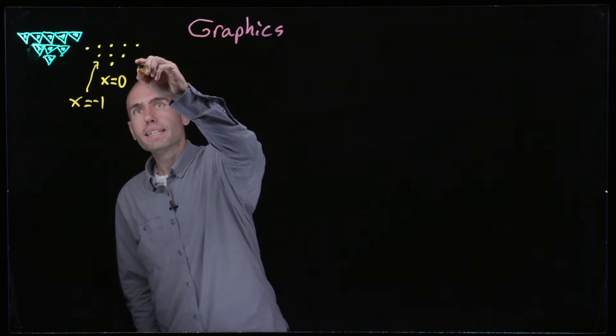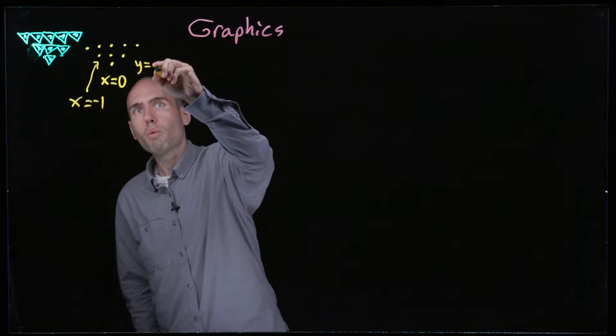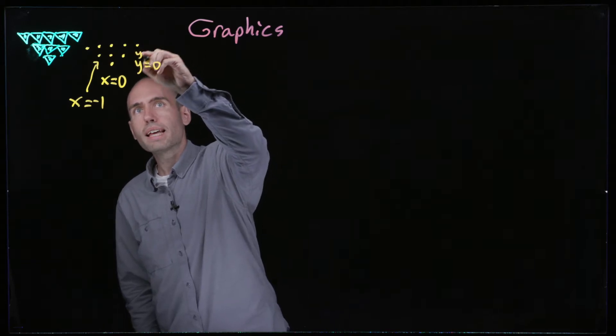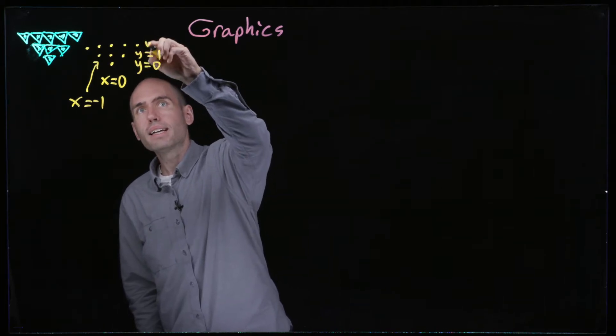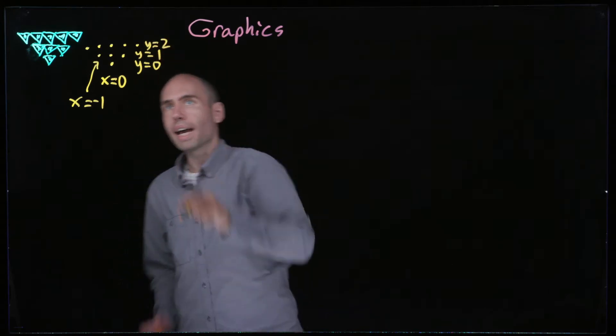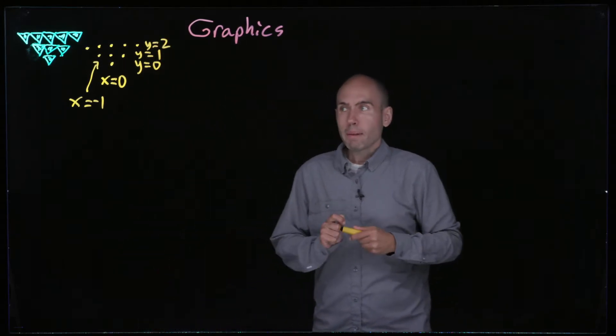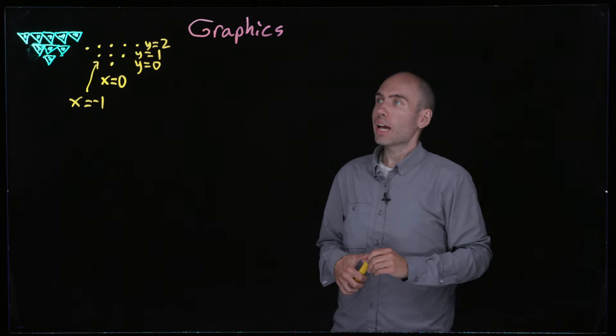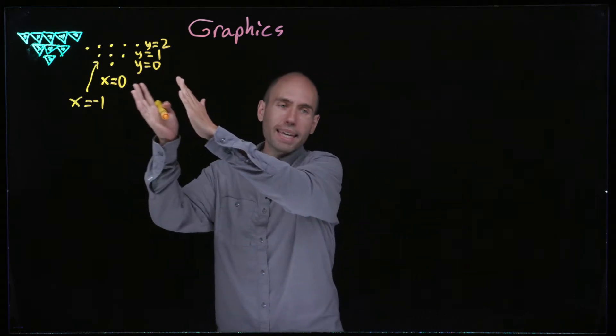Let's say this bottom row is row y equals zero, then row y equals one, and the top is row y equals two. Maybe it seems like I'm going to too much effort for making this, but once we make it in a careful way, I can easily change this number two to a number twenty, say, and I'll get a much bigger image.